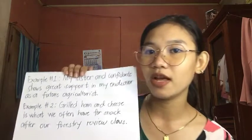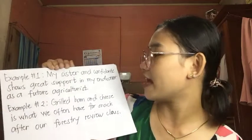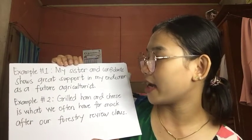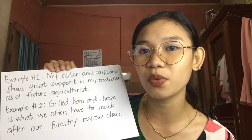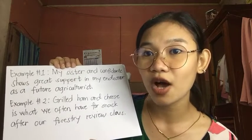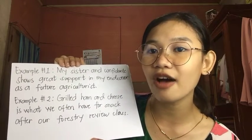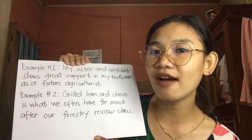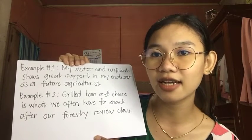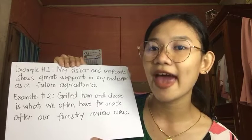Rule number seven: subjects joined by 'and' that mean a single idea take a singular verb. For example, 'My sister and confidante shows great support in my endeavors as a future agriculturist.' Second: 'Grilled ham and cheese is what we often have for snack after our forestry review class.' On the first example we have the singular verb 'shows,' and on the second example we have the singular verb 'is.'